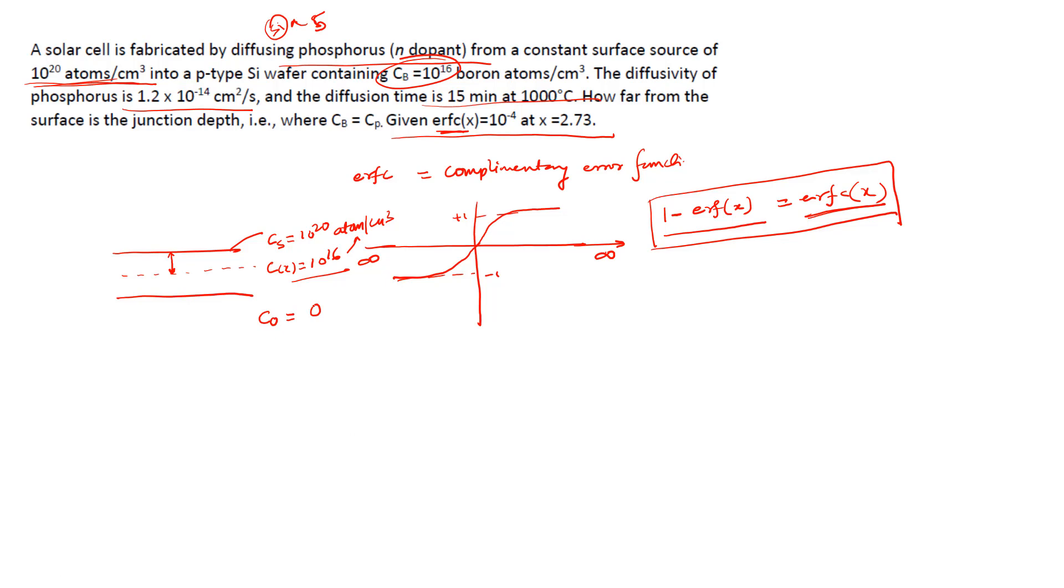D we know is given 1.2 × 10⁻¹⁴ cm² per second. t is 15 minutes, so it will be 15 × 60 seconds. We are not converting this cm² per second into standard units because the concentration is also given in per cm³, so that will be taken care.